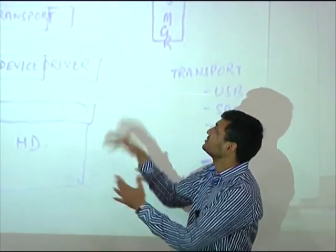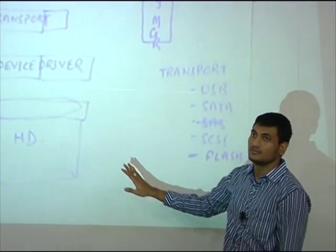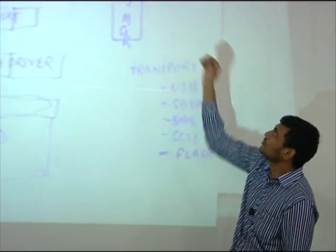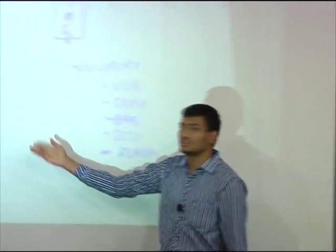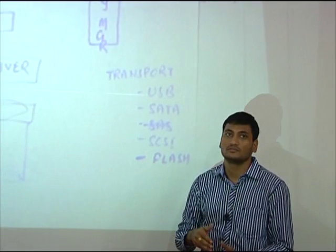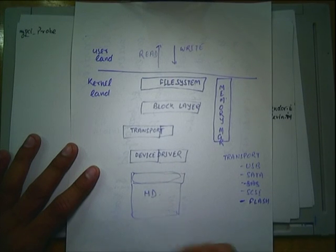All hardware-specific details are contained in the device driver so they don't scatter throughout the whole kernel. From above, say you're watching a movie stored on a hard disk — your media player reads the movie from the hard disk.